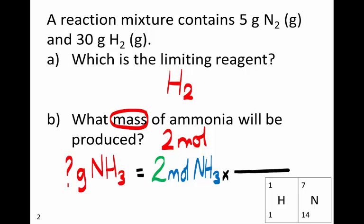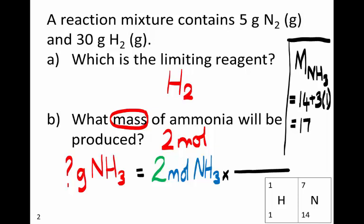We know that the molar mass of ammonia is equal to 14 for the N plus 3 times 1 for the H, which is 17 grams per mole. 17 grams of ammonia is the mass of 1 mole of ammonia. So 2 moles of ammonia have a mass of 34 grams.